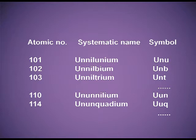One more example: element 114. Its IUPAC name is Ununquadium, and the symbol will be Uuq. This way we can write the IUPAC name of different elements with atomic number more than 100, and it avoided all the controversies.